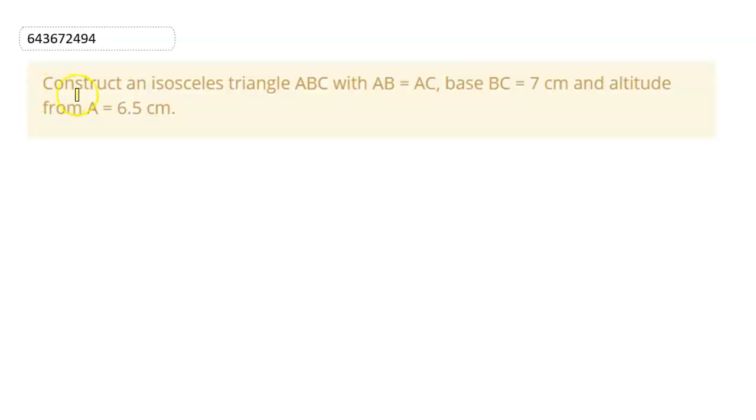Here we have a question: Construct an isosceles triangle ABC with AB equal to AC, base BC equal to 7cm, and altitude from A equal to 6.5cm.